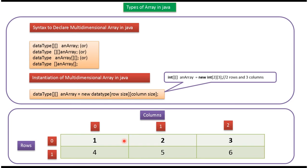A multidimensional array with two rows and three columns will look like this: Row 0 and Row 1, with Column 0, Column 1, and Column 2. We can access elements using row-column indices — for example, [0][0], [0][1], [0][2], and [1][0].